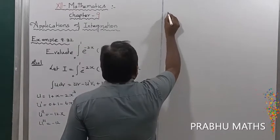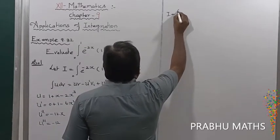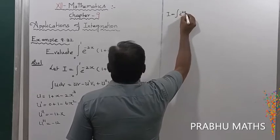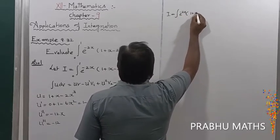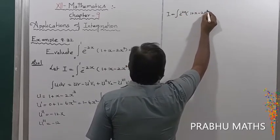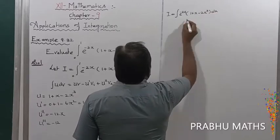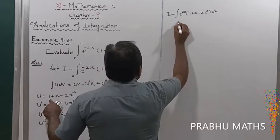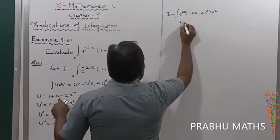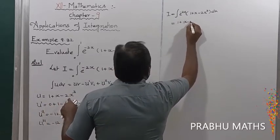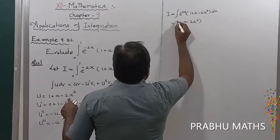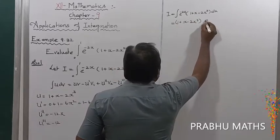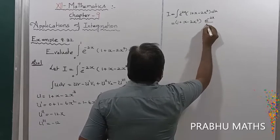Now I is equal to the integral from 0 to 1 of e^(-2x) into (1 + x - 2x³) dx. Applying Bernoulli's formula: u = 1 + x - 2x³, and v = e^(-2x) / (-2) — that is the first term.